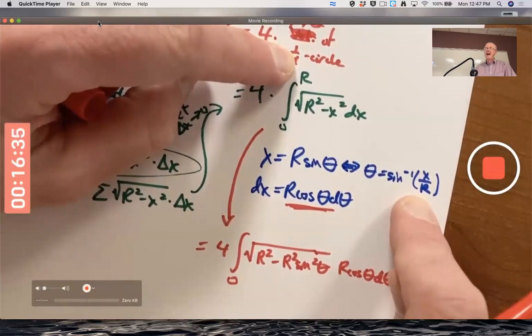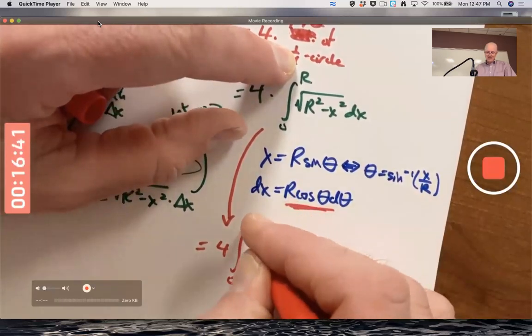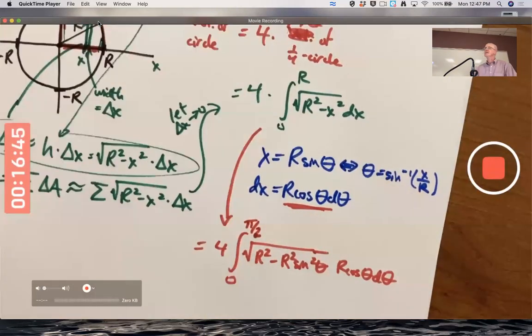When x is the upper limit, capital R, this is inverse sine of capital R divided by capital R. Inverse sine of 1. What is that? That's π/2, 90 degrees, if you think of it as an angle. Sine of 0 is 0. Sine of π/2 radians, 90 degrees, is 1. So inverse sine of 1 is π/2.